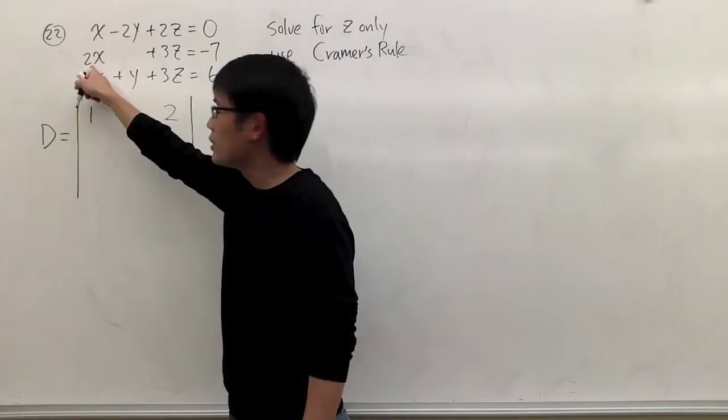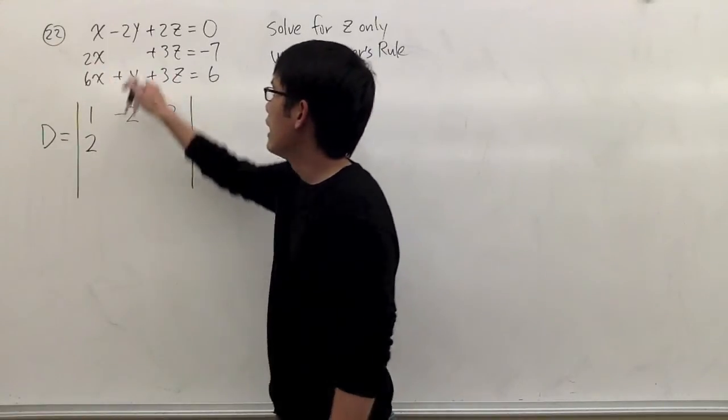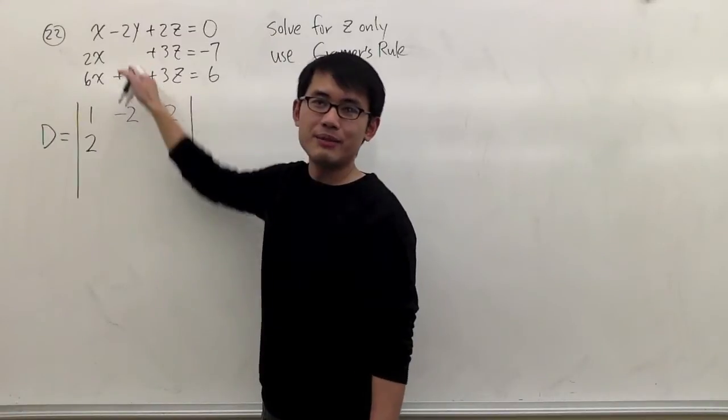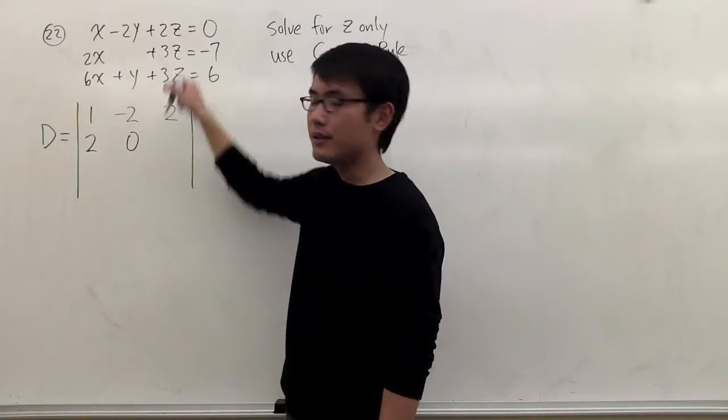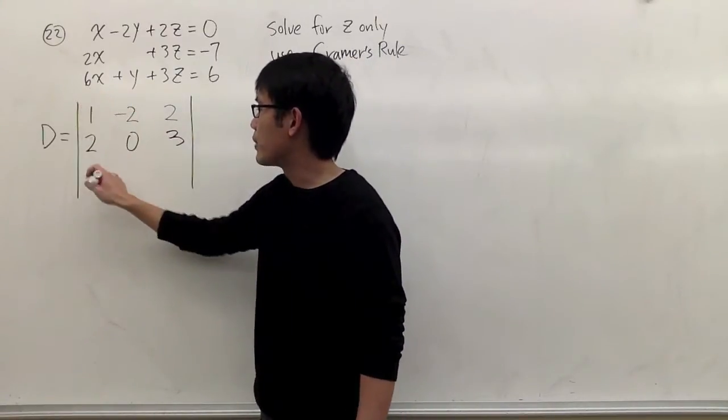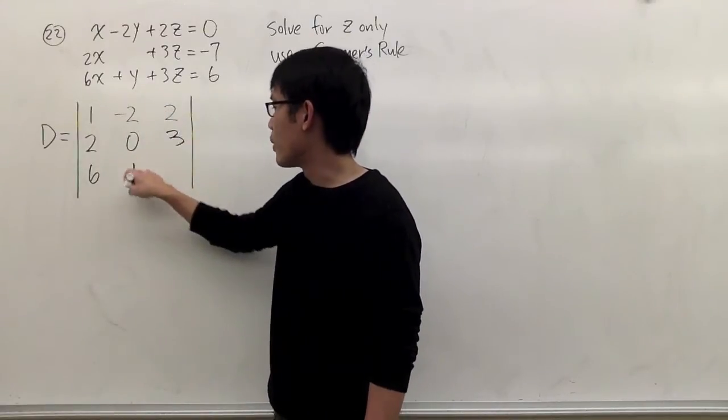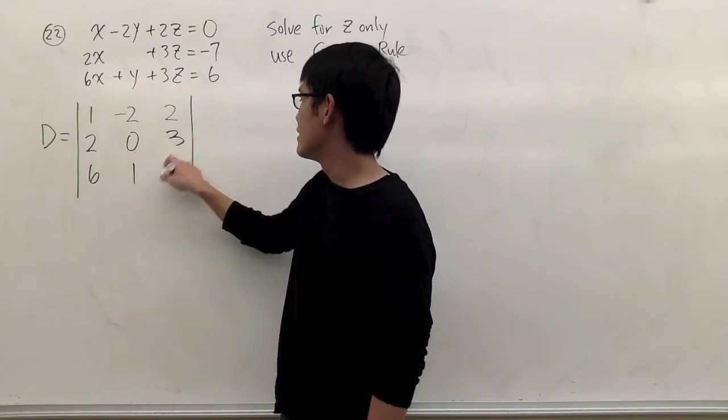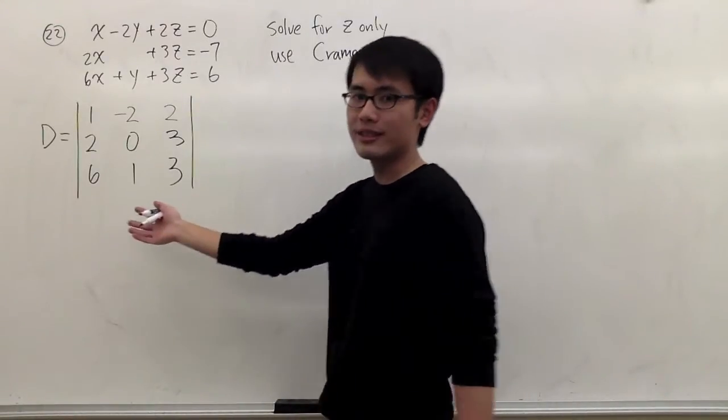And then to continue with the second row, I will have 2 right here and I have no y here, so in math that's equal to 0. I have positive 3. And then continue, I have the 6 right here. I have positive 1y right here, that would be 1, and plus 3z. So I have a 2 right there.